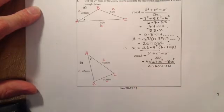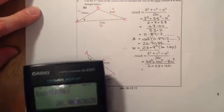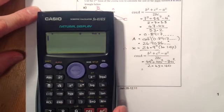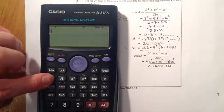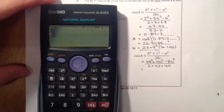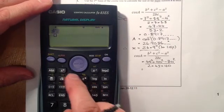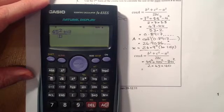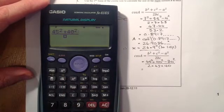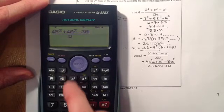Another way I can show you in the calculator for putting this in is if I bring up the fraction button. On the top, I'm just going to put in 45 squared, plus 40 squared, and subtract from that 30 squared. I'll move my cursor button down to the bottom.